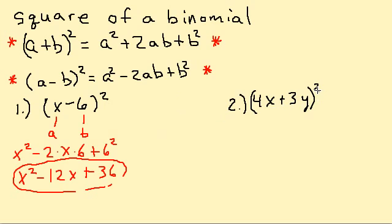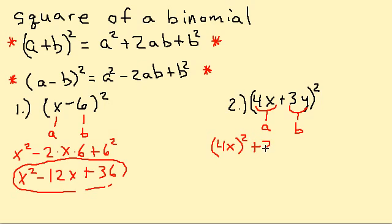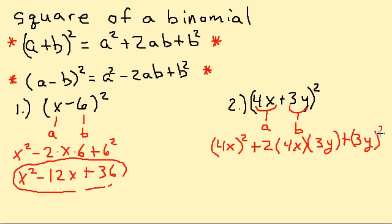Let's take a look at another one. We have (4x + 3y) all of that squared. We're going to use the (a + b) squared formula. The 4x is our a and the 3y is our b. So plugging 4x in for a, we have (4x) squared plus 2 times 4x times 3y.